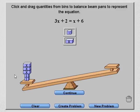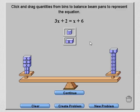So now I have to start working on the right-hand side. On the right-hand side, I need 6 unit blocks. And I need 1x. And as soon as I've done that, now my scale is balanced.